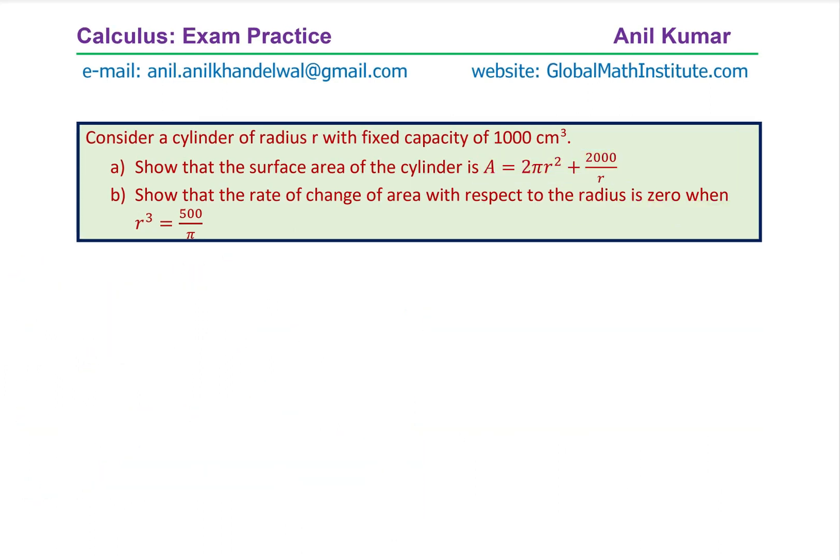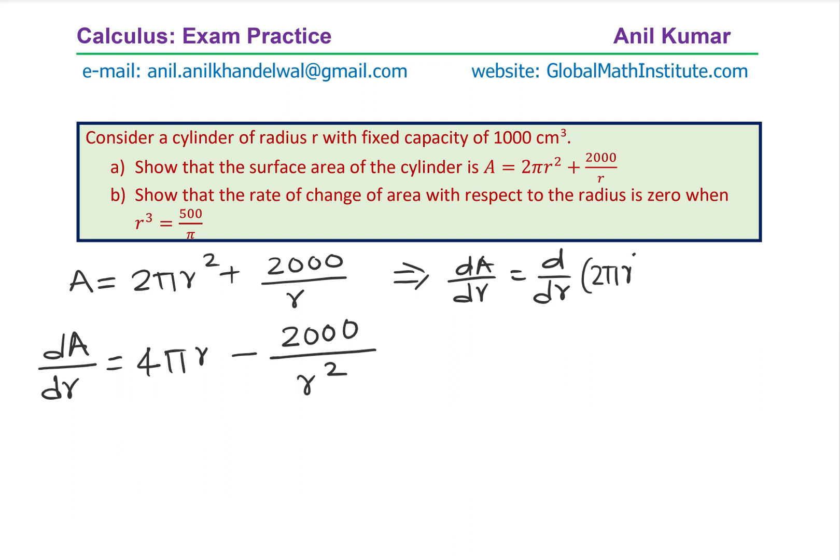So what we already have is that the area equals 2πR² + 2000/R. So rate of change means we'll differentiate area with respect to the radius. So when you do that, you get 4πR here. This is R to the power of minus 1. So you get -2000/R². So the derivative of this.